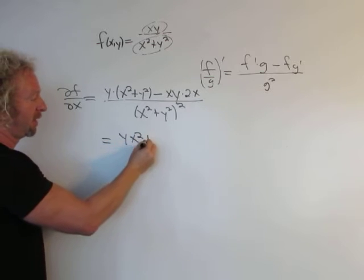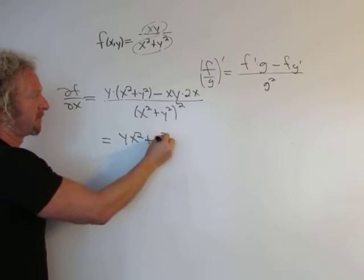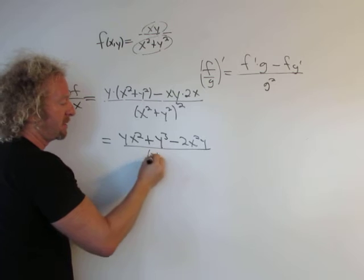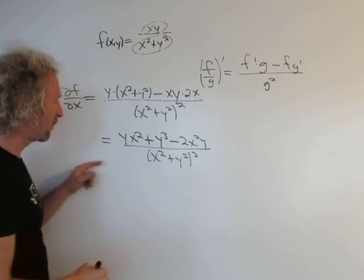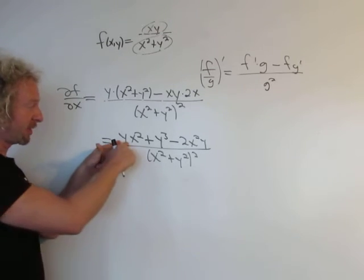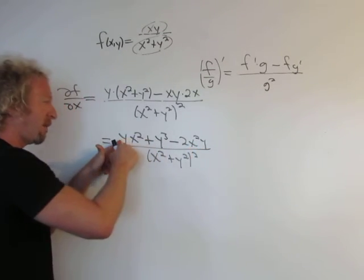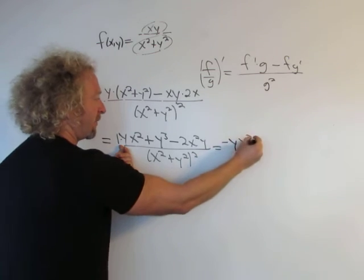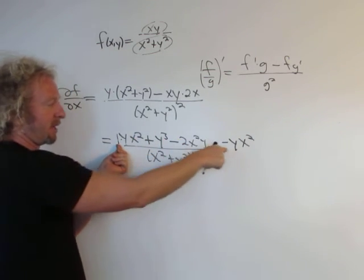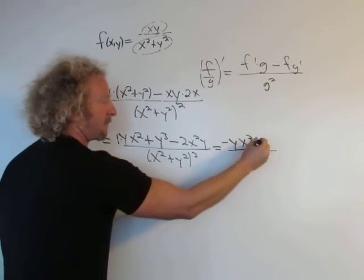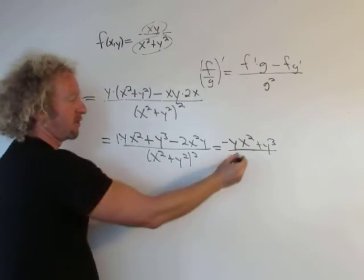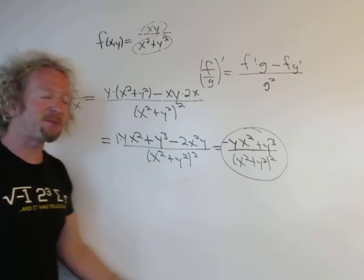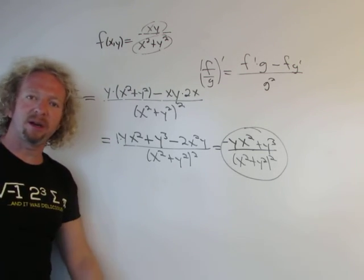Cleaning this up: we get y times (x² + y²) which is yx² + y³, minus xy times 2x which is 2x²y, all over (x² + y²)². Now these are like terms — we have negative 2x²y and yx², so 1 minus 2 gives negative 1, resulting in negative x²y. So the final answer is (y³ − x²y) over (x² + y²)². That's the first partial derivative with respect to x — a harder example because you had to use the quotient rule.